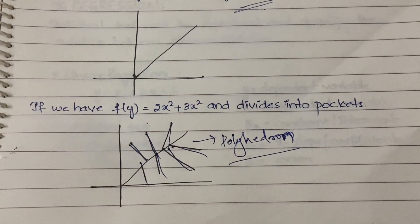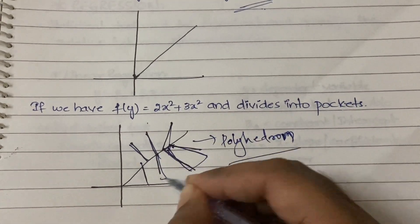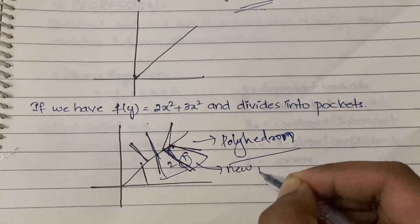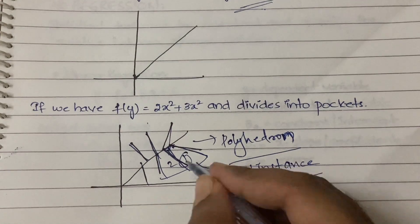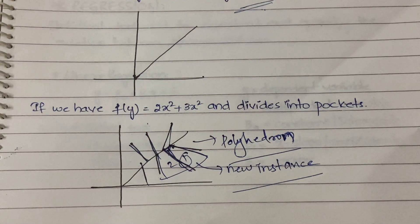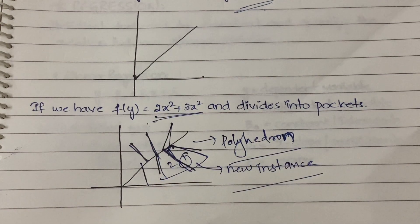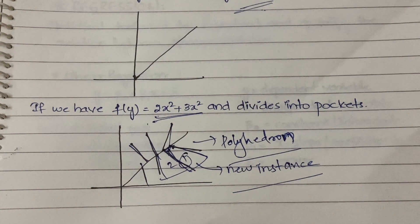Each pocket is called a polyhedron. In each single pocket, you will have a new instance. Whenever a new instance arrives, you allocate it to the pocket already classified based on existing ones. The model uses only what it has previously memorized to accommodate new instances. Even though 2x² + 3x² is a quadratic equation and won't give a linear graph, it still tries to fit new instances into the linear structure it previously learned.